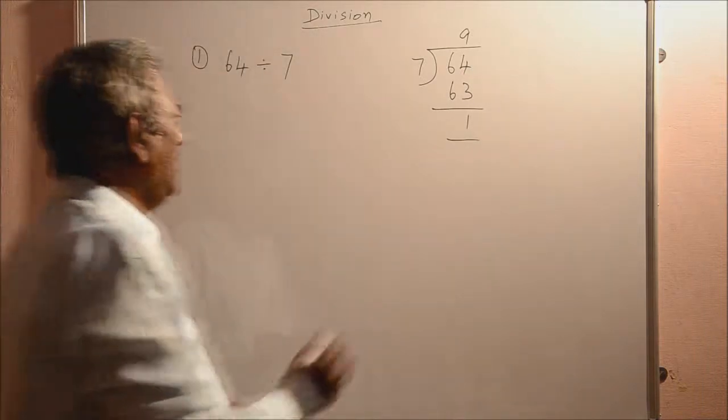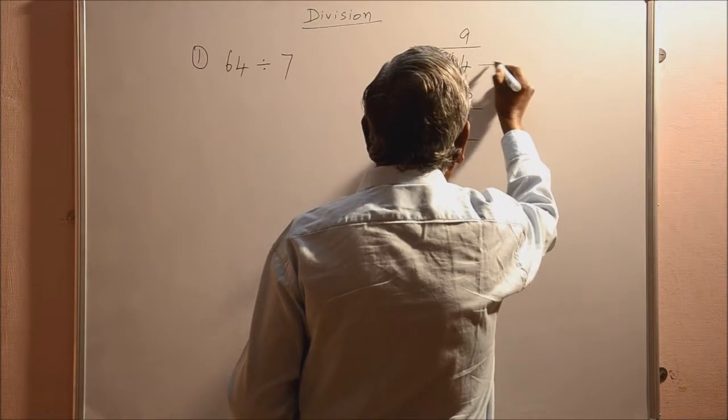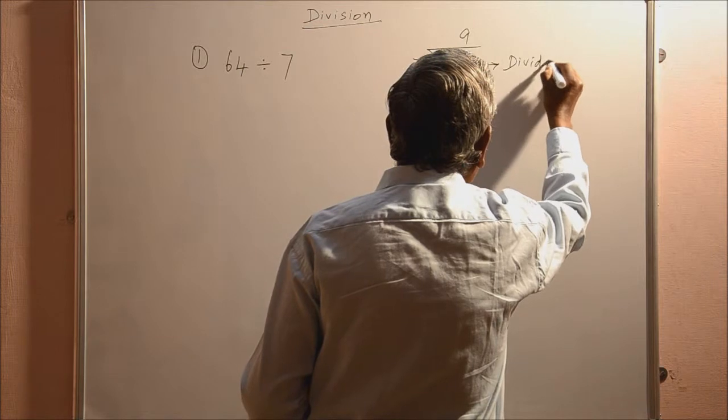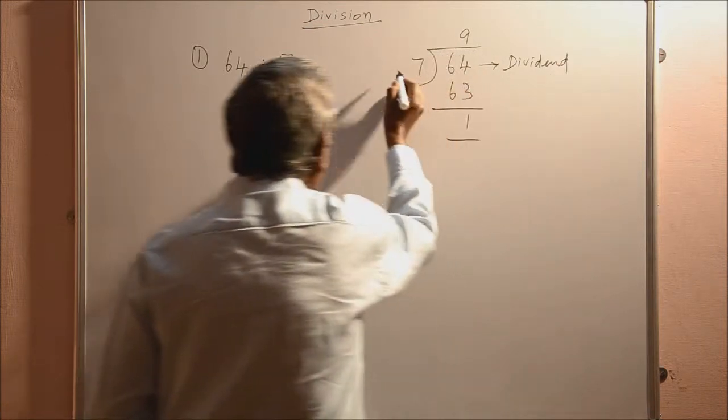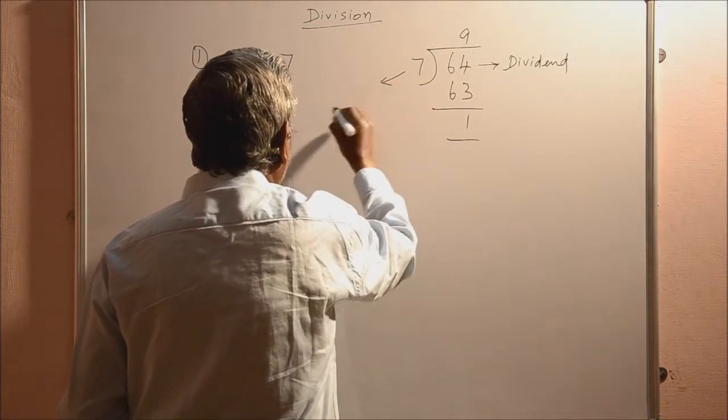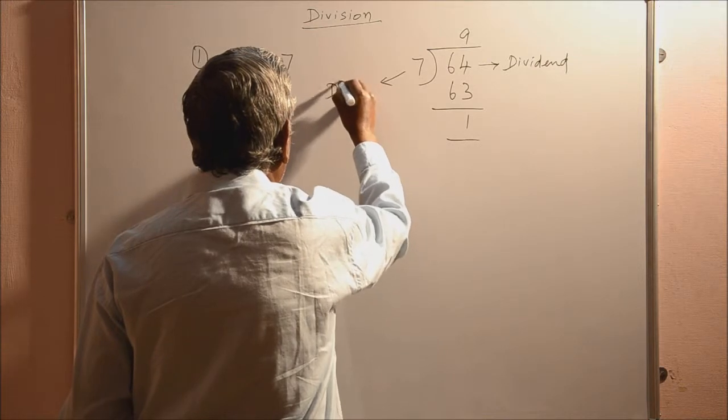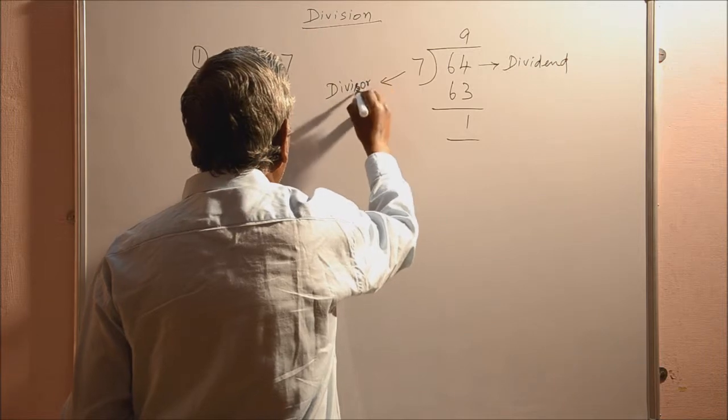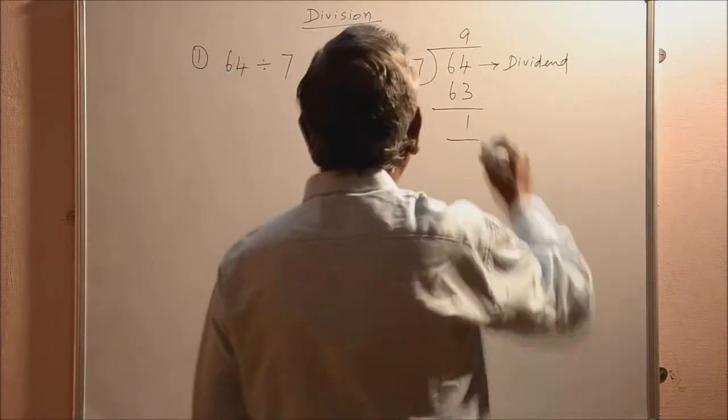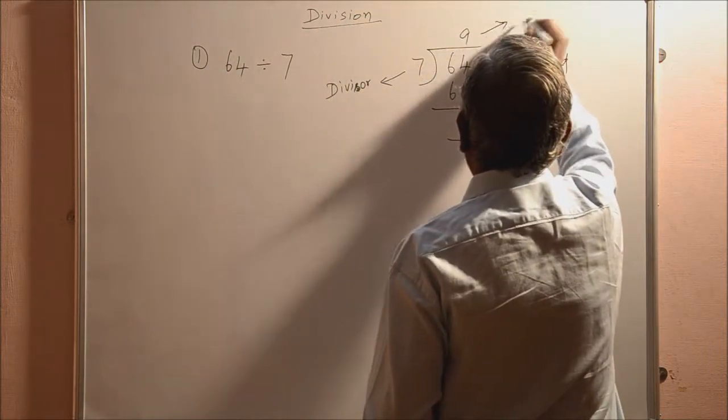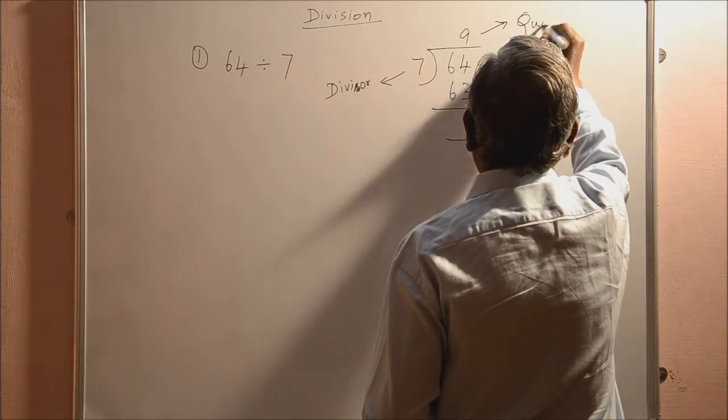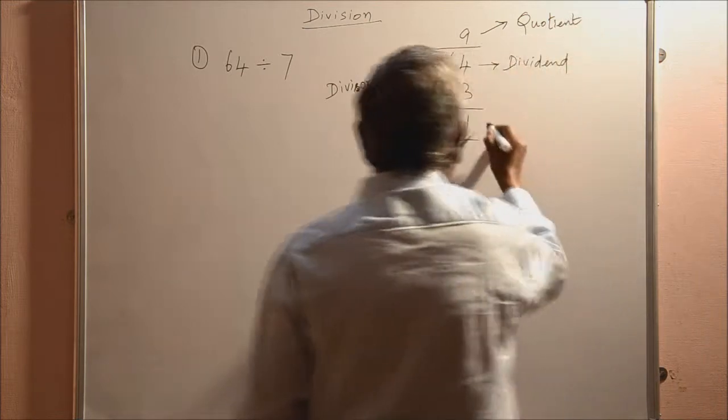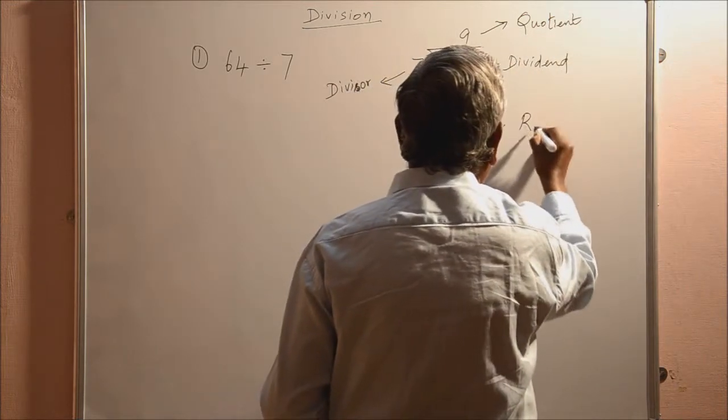So, here, this 64 is called the dividend. And this 7 is known as divisor. And this 9 is called quotient. And this 1 is the remainder.